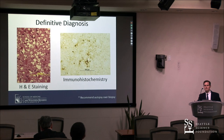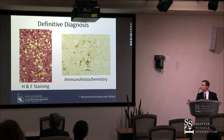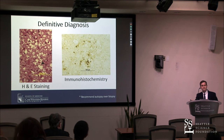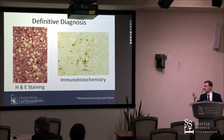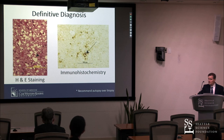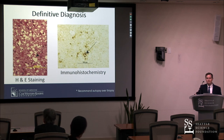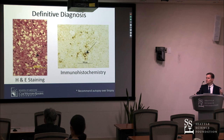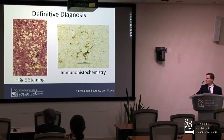The only way to definitively diagnose prion disease is neuropathologic examination. We do this in two ways: H&E staining, where you see large vacuoles that gave rise to the original name spongiform encephalopathy, because the holes look like sponges. We can also use antibody against the abnormal prion protein for immunohistochemistry, showing those brown deposits of prion protein deposition. This can be done at autopsy or by brain biopsy, though we strongly recommend against brain biopsy — it usually doesn't add anything to the diagnosis, only adds trauma to the patient, extended hospital stay, and possible exposure to OR staff.